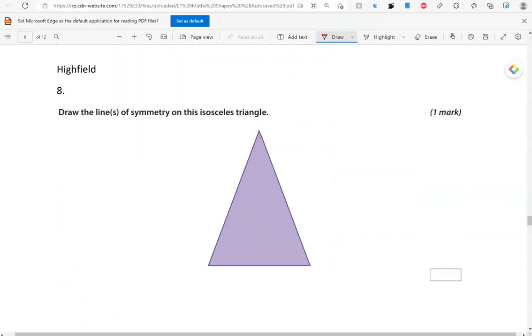Draw the lines of symmetry on this isosceles triangle. So, you could have just one line of symmetry. It's an isosceles triangle, which means that this side has the same length as this side. And this angle has the same size as this angle. So, this triangle has one line of symmetry.